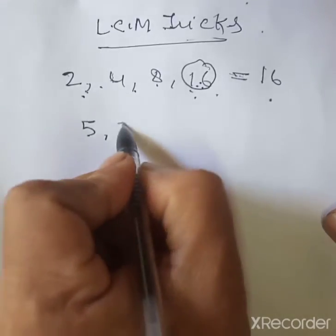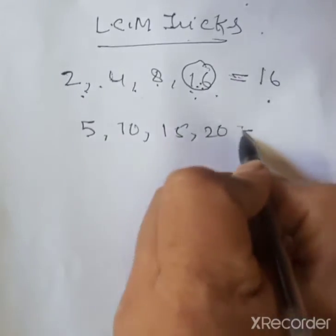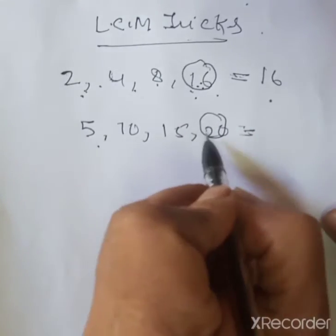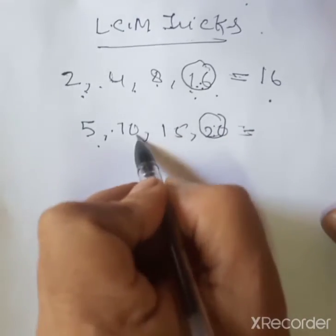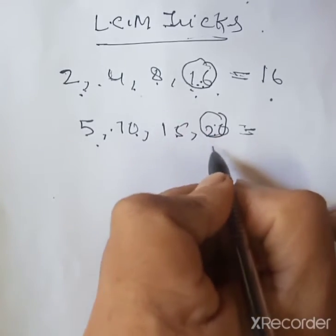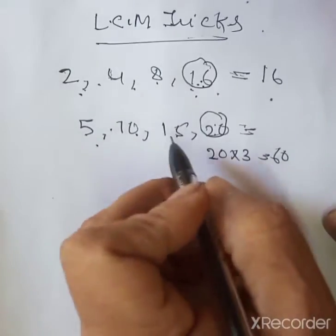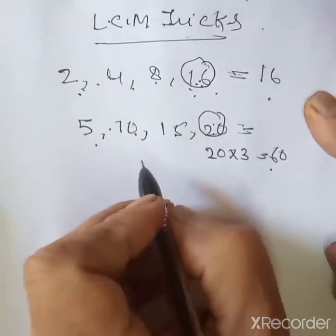Then you have 5, 10, 15, and 20. We take the highest number. Highest number is 20. 20 is divisible by 5, 20 is divisible by 10, but not by 15. So we multiply 20 into 3. It is 60, which is divisible by 15. Your LCM is 60.